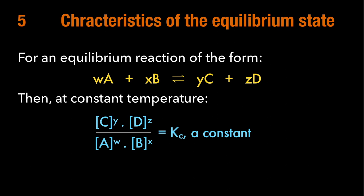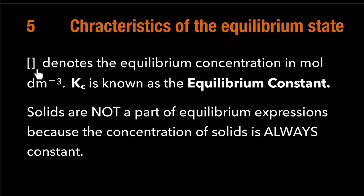The square brackets always denote concentration at equilibrium, and Kc is the equilibrium constant. One important note for later: we do not include solids in the equilibrium expression, because solids don't mix in solution and their concentrations are always constant. But don't worry about that today — we'll talk about it later.